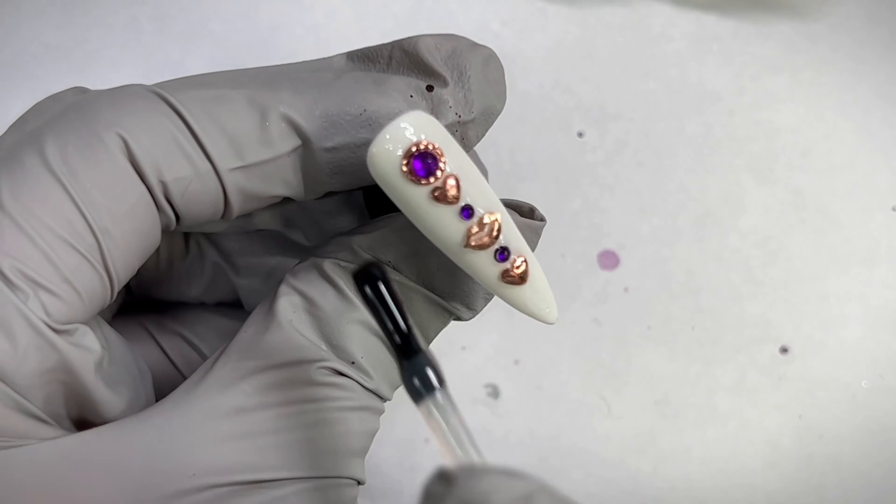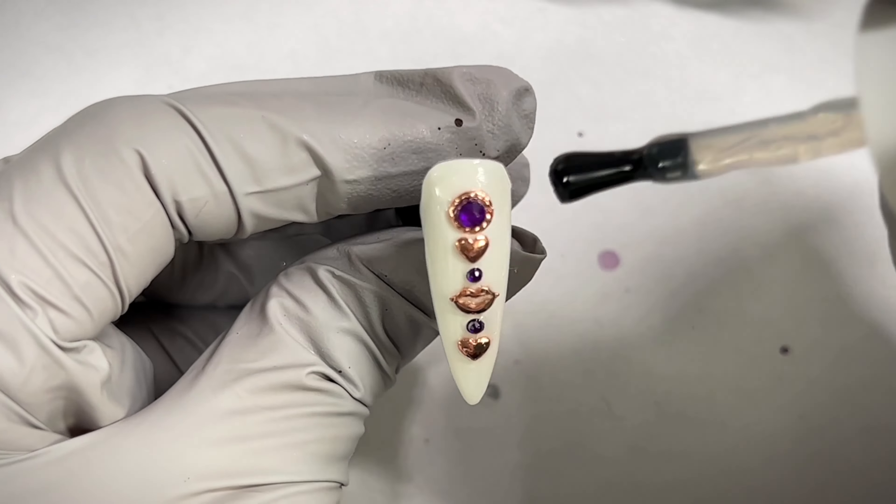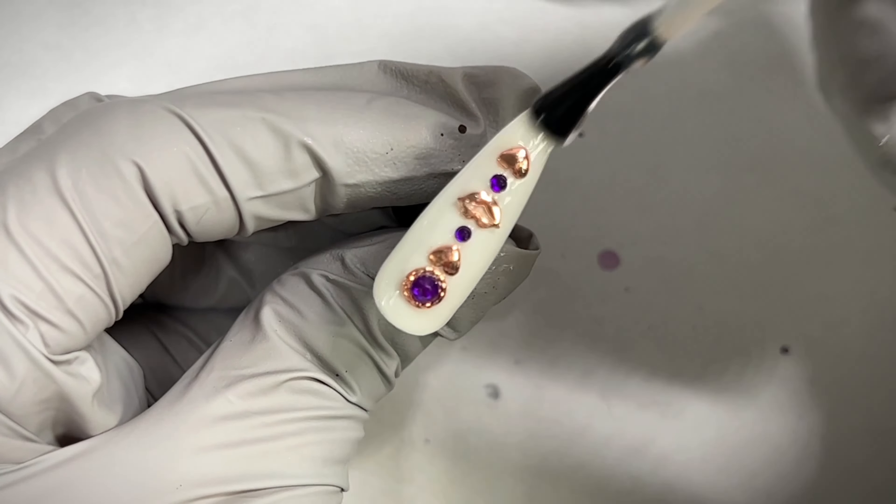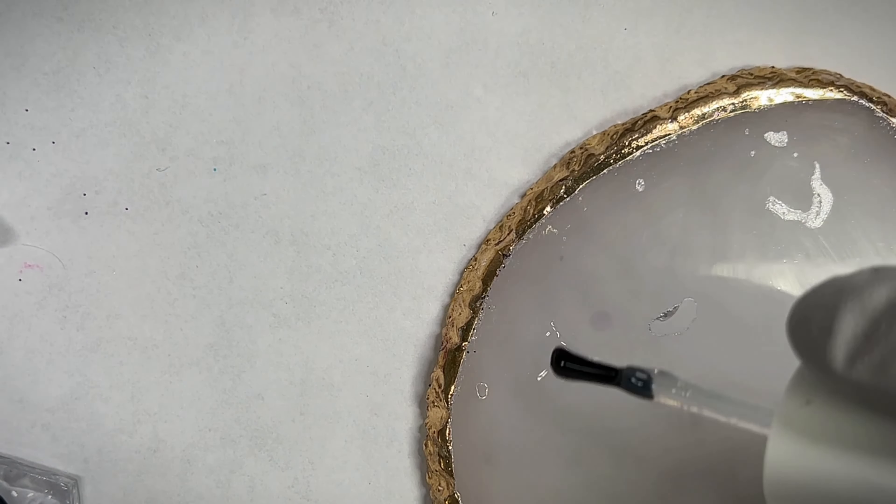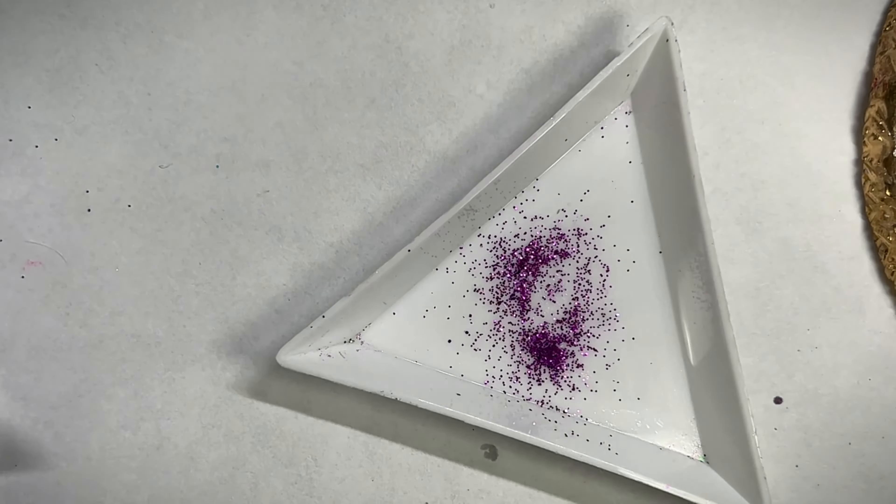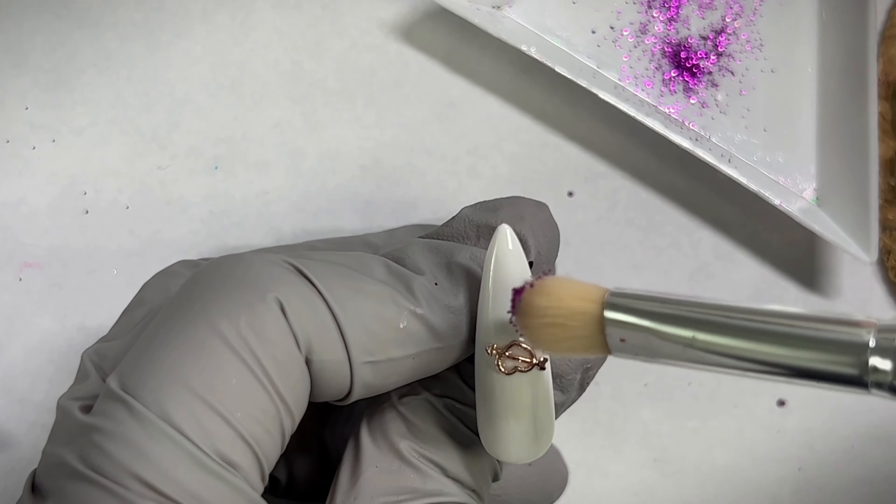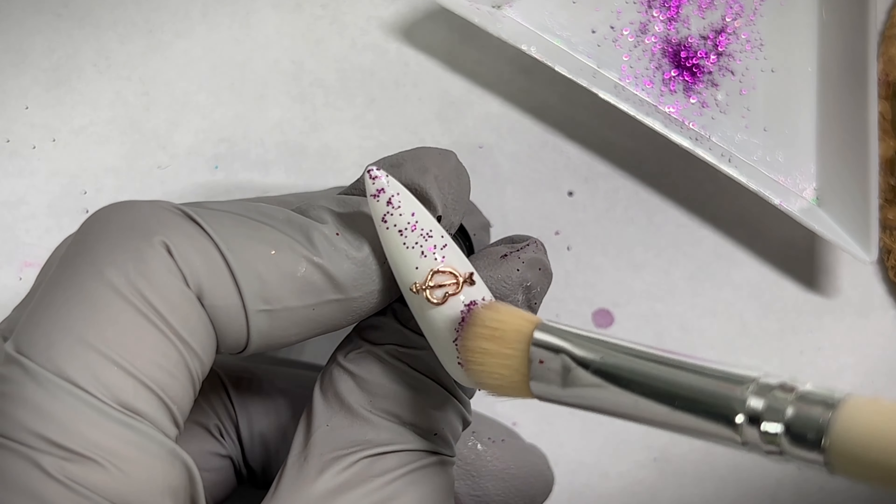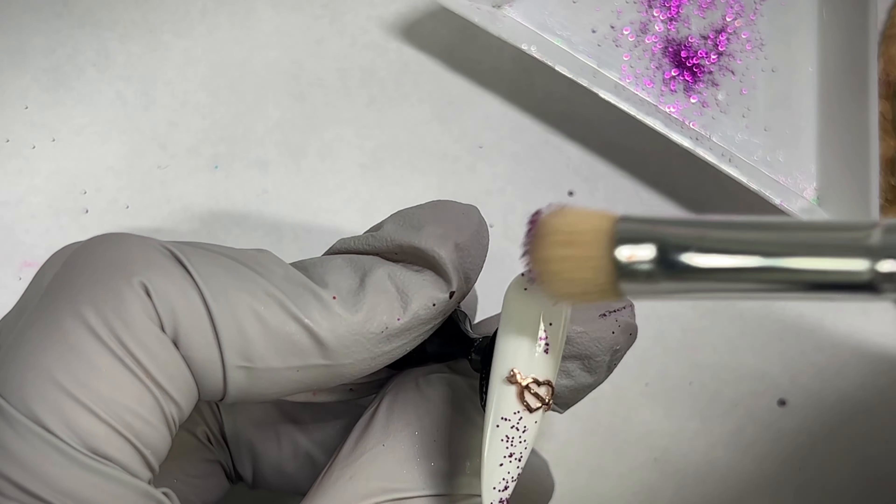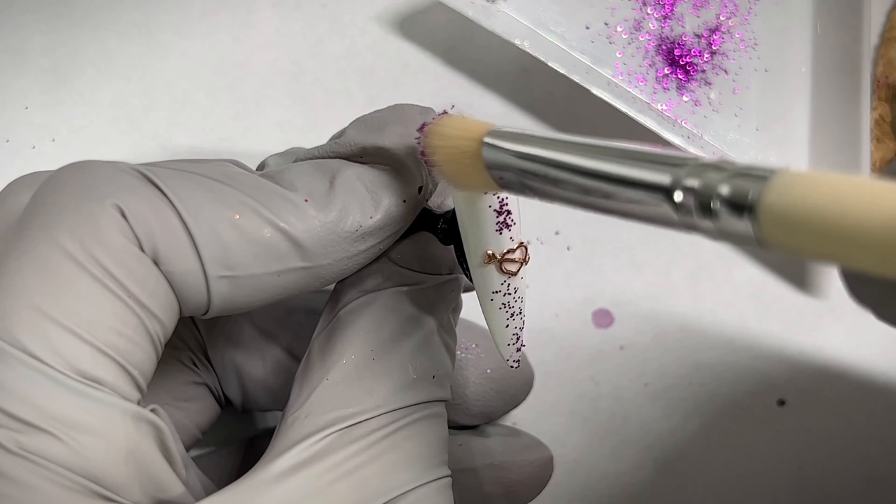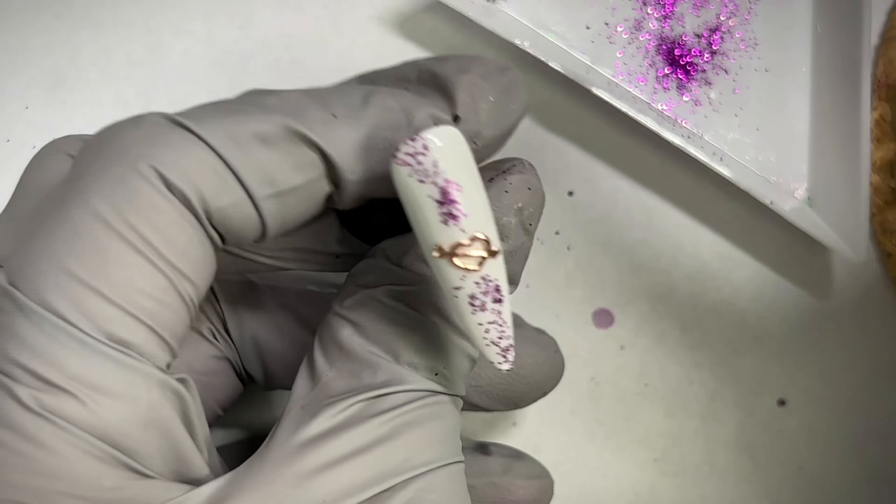Once I added those, I went ahead and added top coat on the rest of the nail again and cured everything for 60 seconds. Lastly, I placed some base coat on this palette here and I'm taking this purple glitter that I got from Amazon. I'm gonna just take my brush, dip it into the base coat and then dip into the glitter just to kind of disperse the glitter thinly along this nail. I then cured that for 30 seconds and added one more layer of top coat and that is the last step for this set.